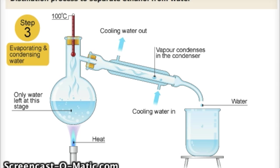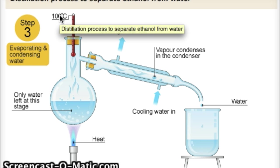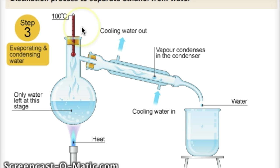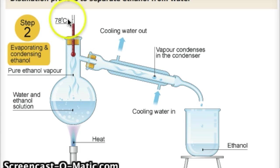If we reach 100 degrees Celsius, then the water begins to boil as well. But at first, if we reach 78 degrees, the thermometer says 78 degrees, and the ethanol is coming off and turning into a liquid.